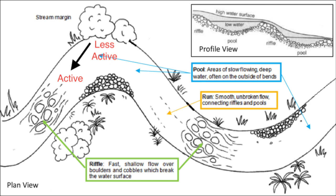The areas I want to talk about today are chasing those active fish in the riffles. As you can see in this diagram, I noted where the less active fish will typically stage, as they don't want to exert energy.